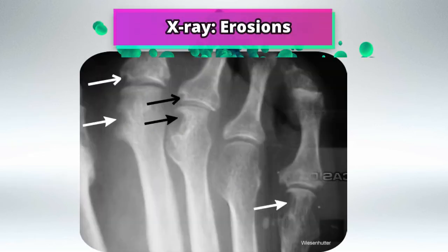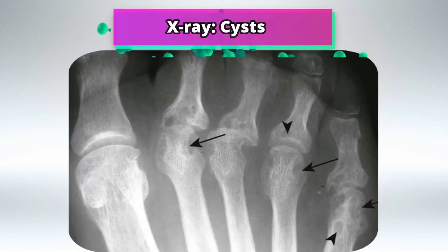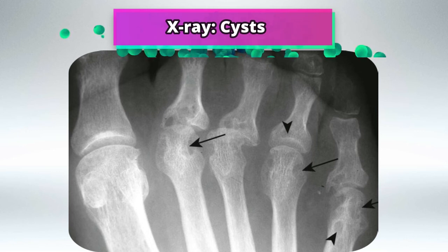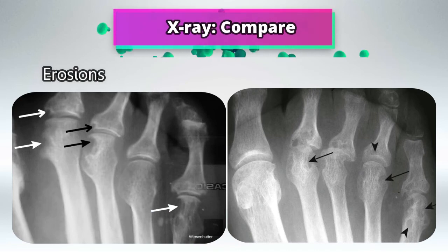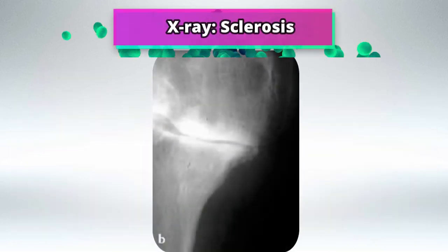E is for eyes — specifically scleritis. In bone changes, we'll see subchondral erosions and subchondral cysts. Here you can compare the two side by side: the erosions are more diffuse and the cysts are more circular in shape. There is also subchondral sclerosis with decrease in the joint space.